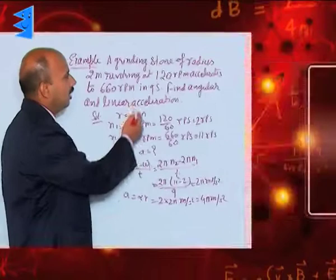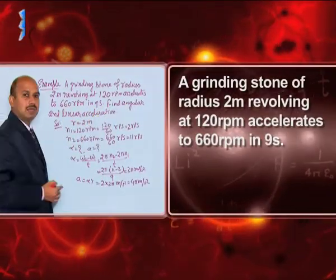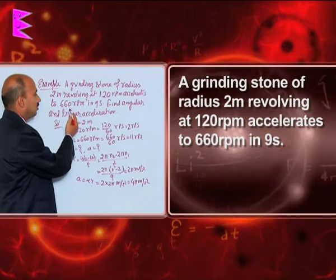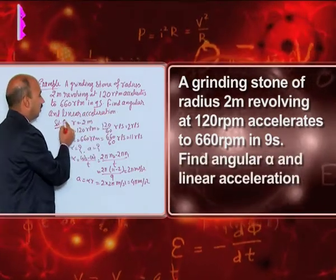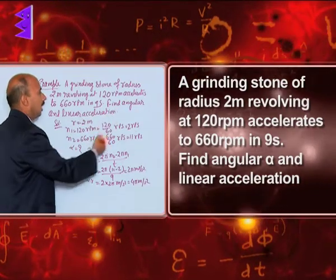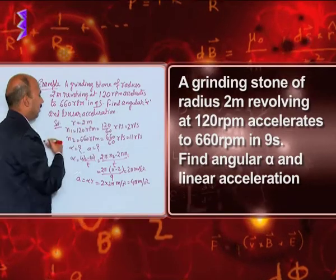Now, in this question a grinding stone of radius 2 meter revolving at 120 revolution per minute accelerates to 660 revolution per minute in 9 seconds. Find angular acceleration alpha and linear acceleration.